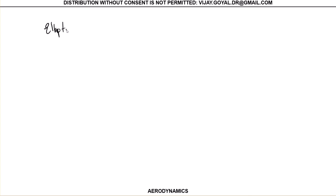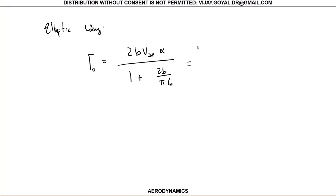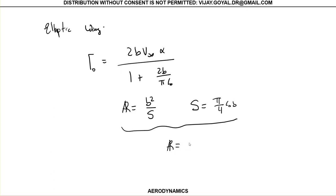We can keep working with those expressions. For the elliptic wing, you have this equal to this. This is for a generic case having a downwash velocity — you're going to learn that in the next lesson. From here, your aspect ratio is defined by AR equal to pi over 4 times c sub zero times b. Or equivalently, your aspect ratio is equal to 4b over pi times c sub zero.